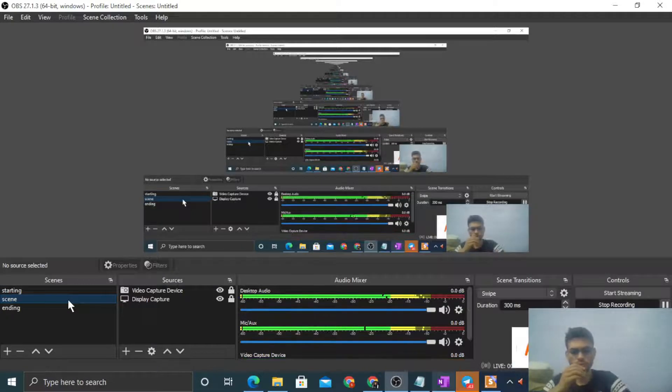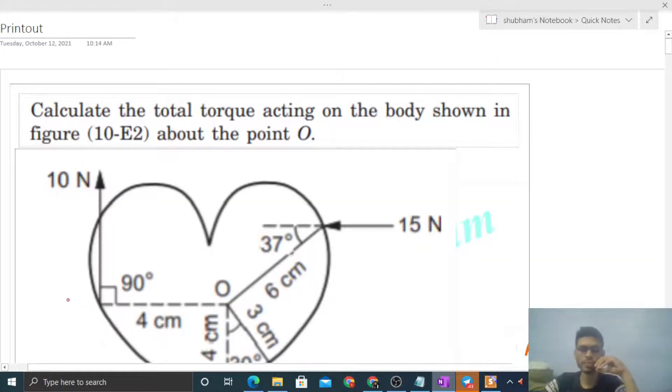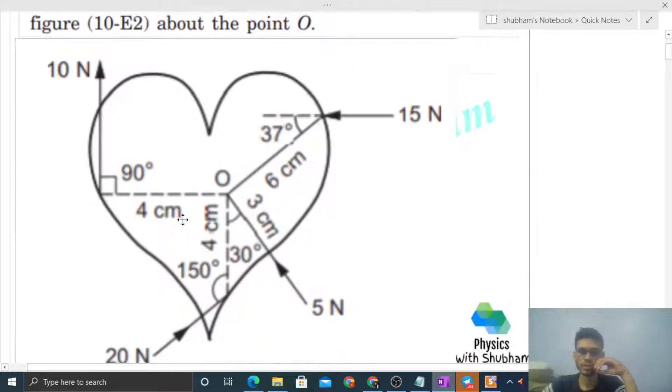Okay, hi everyone. Today let's discuss this interesting problem. It says calculate the total torque acting on the body shown in figure about the point O. So we have a body and multiple forces are acting on this body, and we have to find out the net torque about this point O.